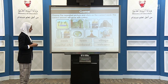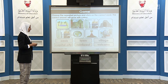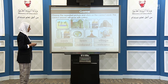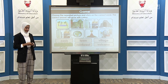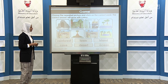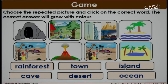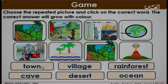Let's start. Is it village? No. Is it oasis? No. The repeated picture is capital city. Excellent. Is it island? No. Is it town? No. The repeated picture is desert. Good job. The repeated picture is rainforest. Good job.